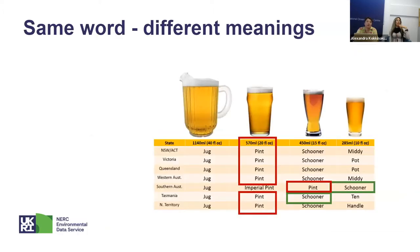The same word can also have different meanings. Here there's an example of the usage of 'pint' in Australia — depending where you are in Australia, you will have less beer for your money than in other states. This emphasizes the need for standards; in this case it would be the metric system.